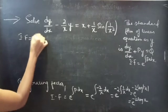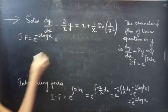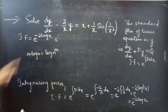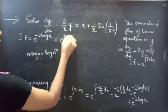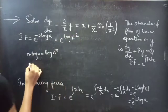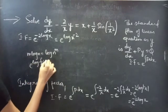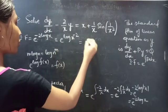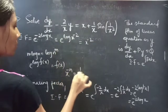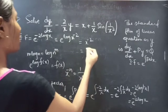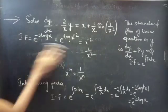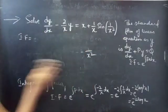The integrating factor equals e to the power of minus 2 log x. We know that m·log n can be written as log(n^m), so we write minus 2 log x as log(x^(minus 2)). And since e to the power of log(f(x)) equals f(x), and x^(minus 2) equals 1/x², therefore our integrating factor is 1/x².